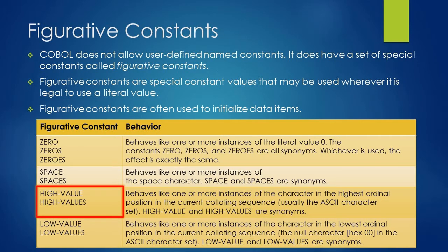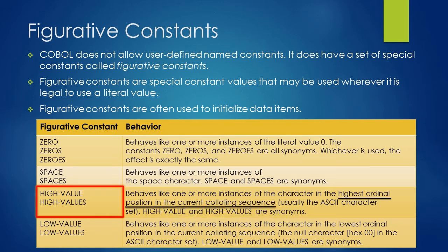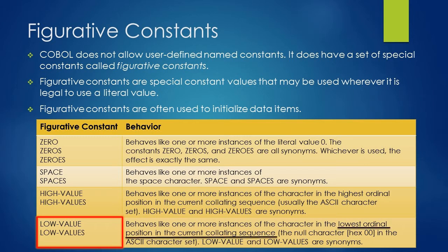The next figurative constant is HIGH-VALUE. HIGH-VALUE and HIGH-VALUES are synonyms, which behave like one or more instances of the character in the highest ordinal position in the current collating sequence — usually the null character in the ASCII character set. Similarly, there is LOW-VALUE, which behaves like one or more instances of the character in the lowest ordinal position in the collating sequence, also the null character in ASCII. LOW-VALUE and LOW-VALUES are synonyms and the effect is exactly the same.